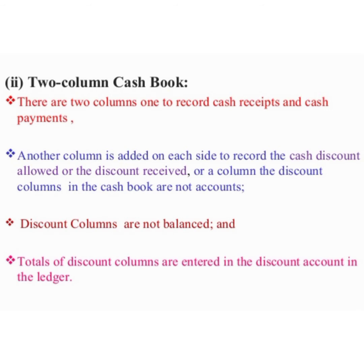The second type of cash book is the double column or two column cash book. There are two columns — one to record cash receipts and cash payments, and another column is added on each side to record cash discount allowed or discount received. The discount columns are not balanced; the totals of the discount columns are entered in the discount account in the ledger.